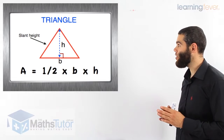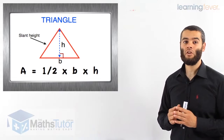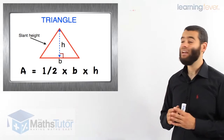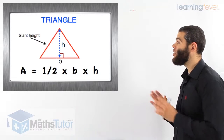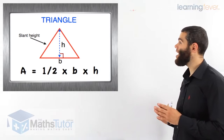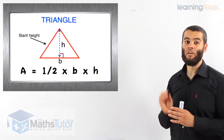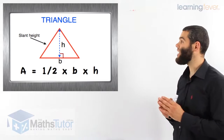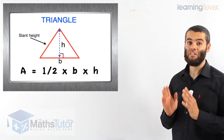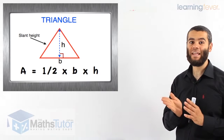It's very important to note that when working with triangles, we need to locate the height. The height is actually the vertical height — it's the height that goes straight down. Very important. It's not the slant height. Be careful. The slant height is the height that's slanting.